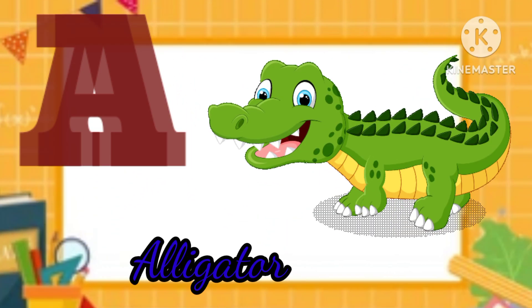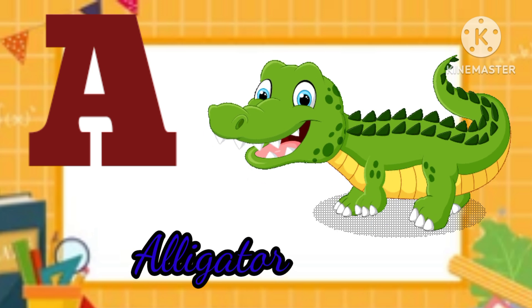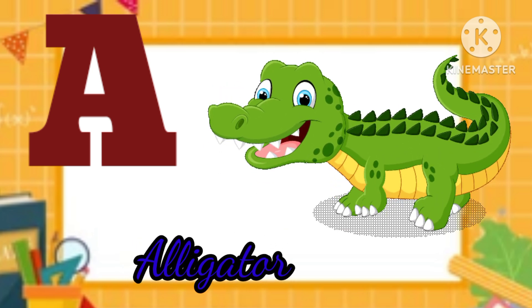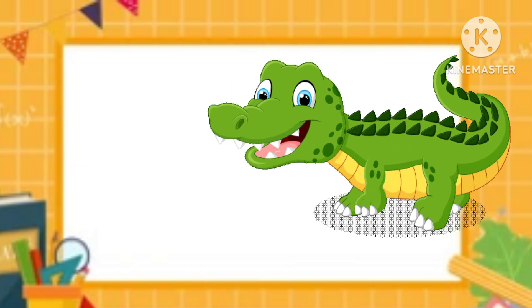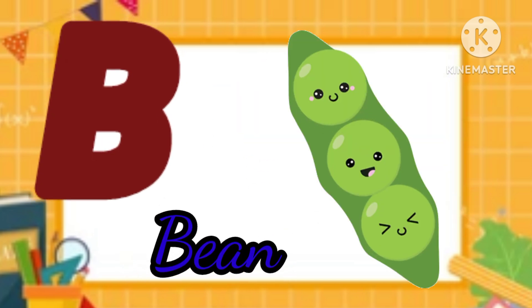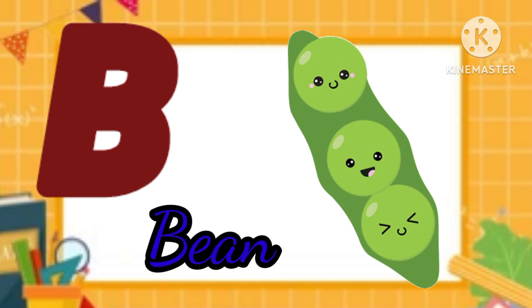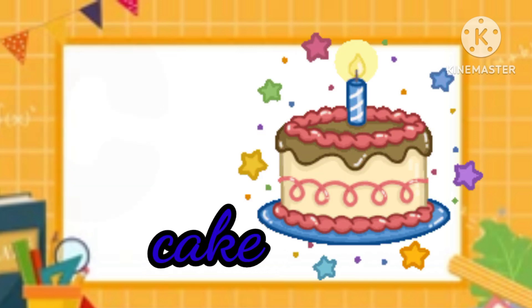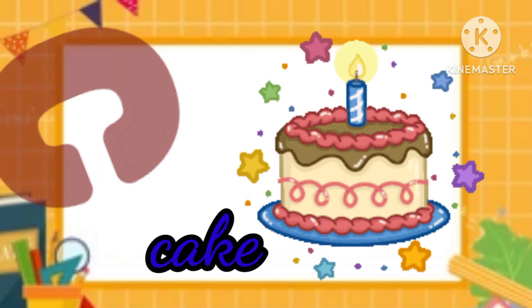A is for Alligator. A, A. Alligator. B is for Bean. B, B. Bean.